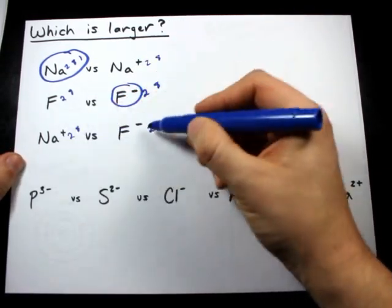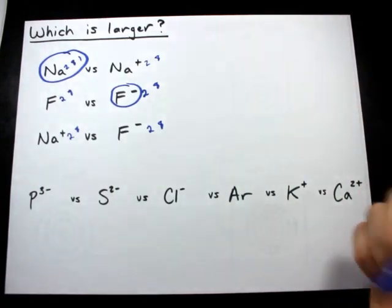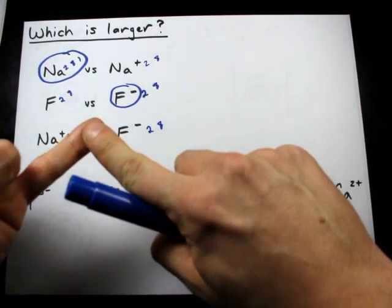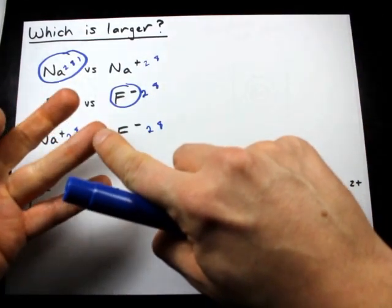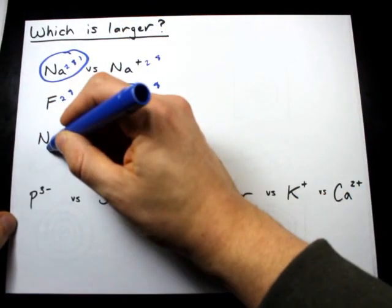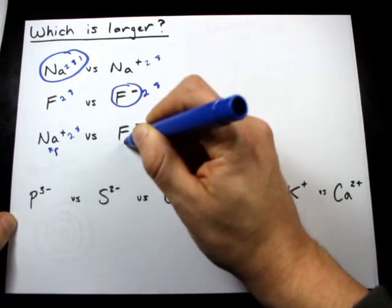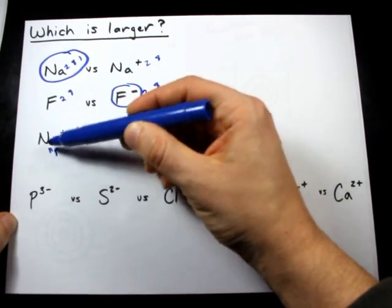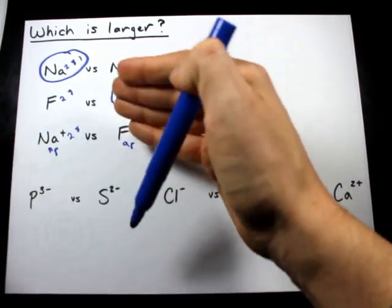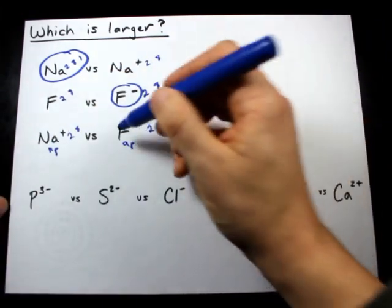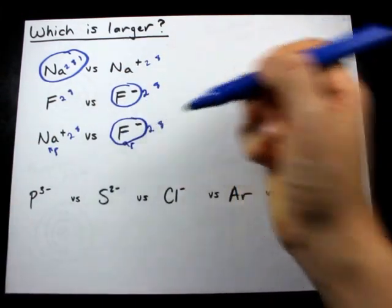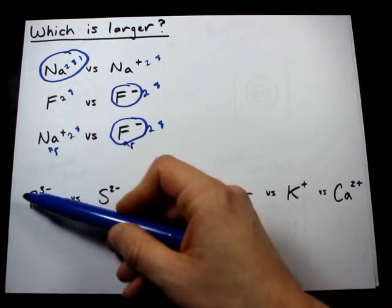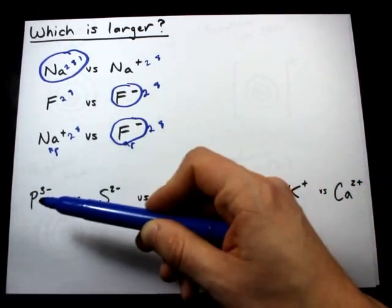That's the same number of shells. It's going to come down to the number of protons. Sodium has 11 protons, fluorine is 9 protons. The one with more protons is smaller because those electrons can be held closer. So F minus is larger than Na plus.